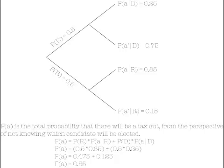Here's the chart you can use to figure this stuff out. P(D) equals 0.5. P(A given D) — the probability that the Democrat, if elected, cuts the taxes — is 0.25. P(A' given D) — the probability that the Democrat, if elected, does not cut taxes — is 0.75. P(R) is also 0.5. P(A given R) is 0.85, and P(A' given R) is 0.15.